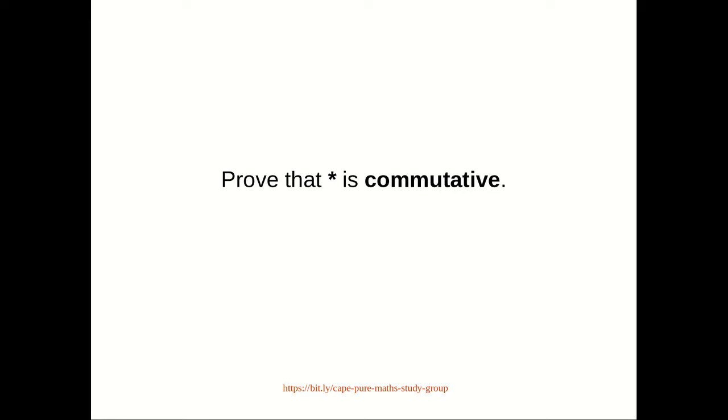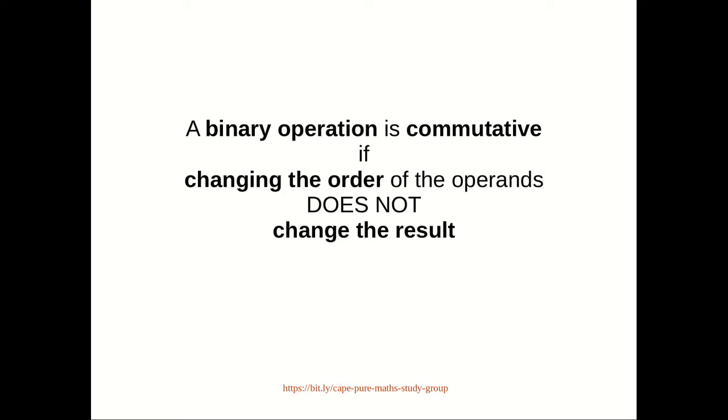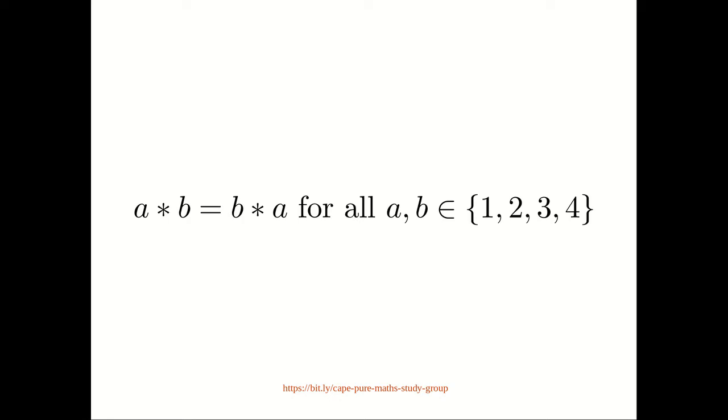So in the first part, we need to prove that star is commutative. We recall that a binary operation is commutative if changing the order of the operands does not change the result. Hence, to show that star is commutative, we need to show that for all a, b in the set {1, 2, 3, 4}, that a star b is equal to b star a.